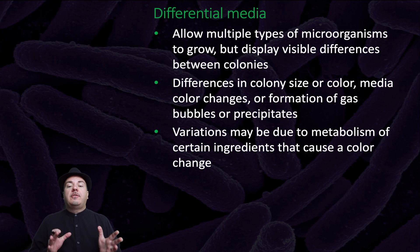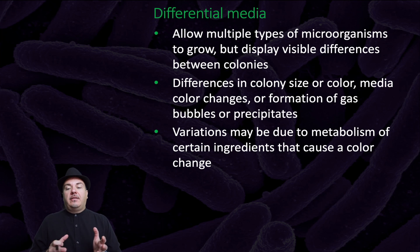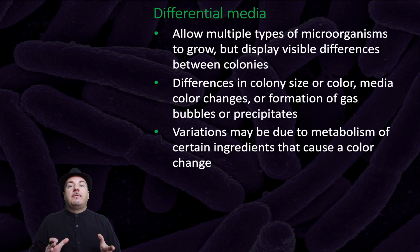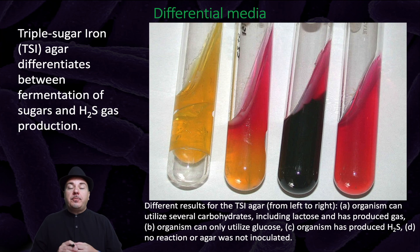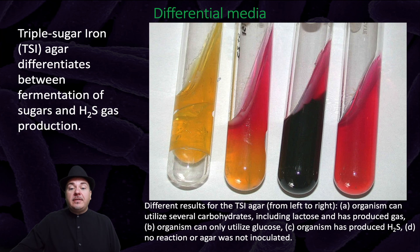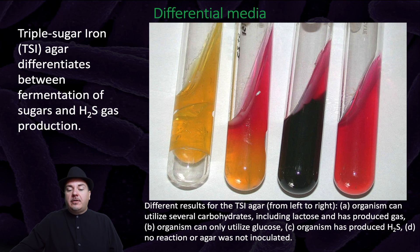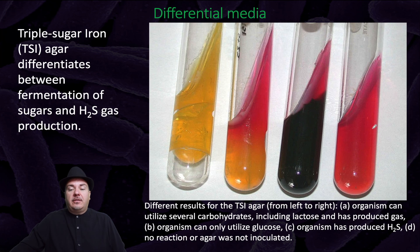Differential media allows multiple types of microorganisms to grow but displays visible differences between the colonies — differences in colony size or color, media color changes, or formation of gas bubbles or precipitates. Variations may be due to metabolism of certain ingredients that cause a color change. For example, this triple sugar iron agar differentiates between fermentation of sugars and hydrogen sulfide gas production. In these test tubes, the one on the left indicates it can utilize several carbohydrates and produces gas; the next one can only utilize glucose; the next organism has produced hydrogen sulfide gas; and the last test tube either has no reaction or the agar is not inoculated with a microorganism.